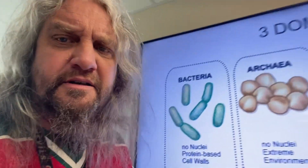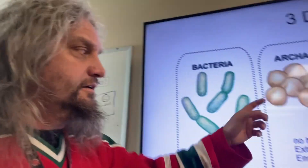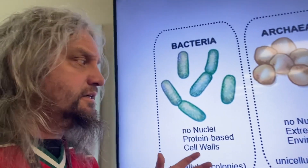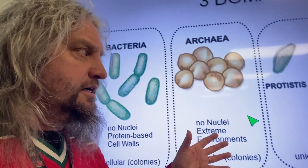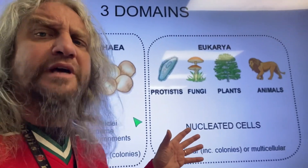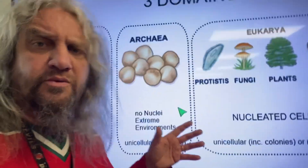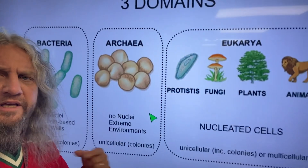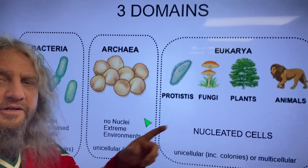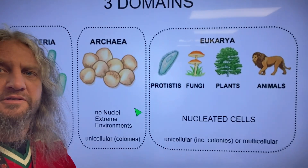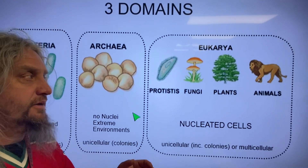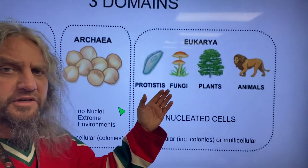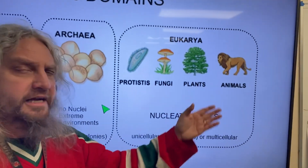Let's start with the domain. There are three domains: bacteria, the true bacteria; archaea; and then eukarya, the ones with nucleated cells. We're eukaryotic organisms — that's our domain. And in that domain with us are all the protists, all the fungi, all the plants, and all the other animals.